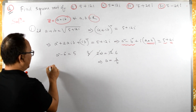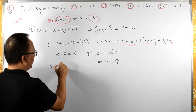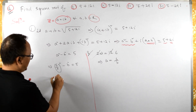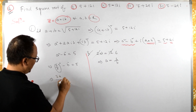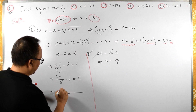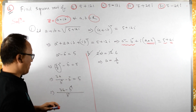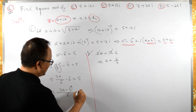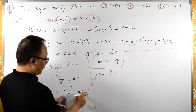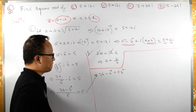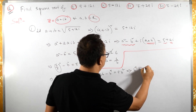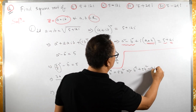Now let us substitute this value of a. This gives us (6/b) squared minus b squared equals 5, which is 36 upon b squared minus b squared equals 5. Multiplying through by b squared: 36 minus b to the fourth equals 5b squared. So b to the fourth plus 5b squared minus 36 equals 0.